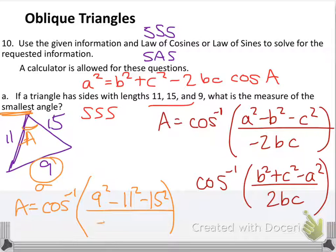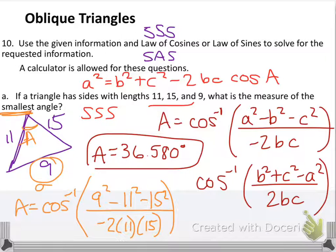When I do this and put this in the calculator, I'm going to get angle A equal to 36.580. And I should expect to get a smaller number. My smallest angle will always be an acute angle.